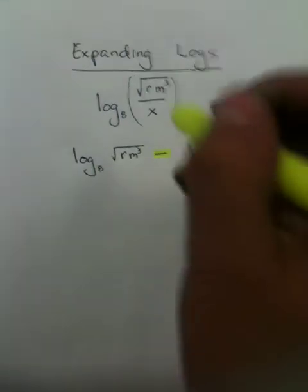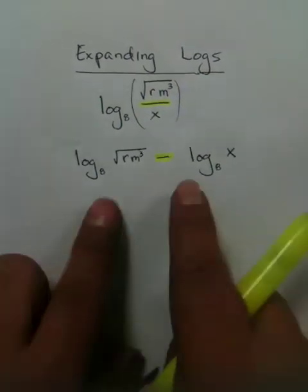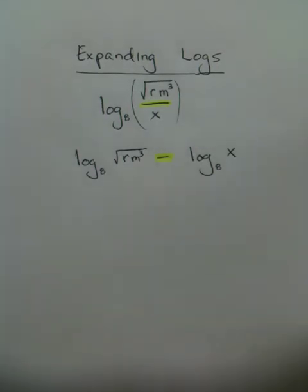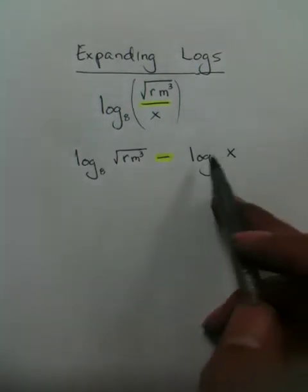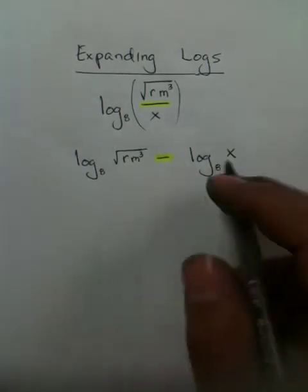So this subtraction is the same thing as the division bar, except now you have two separate logs. Now as much as you say this is perfect, it's as simple as it can be, over here you have a whole bunch of things that can be done.